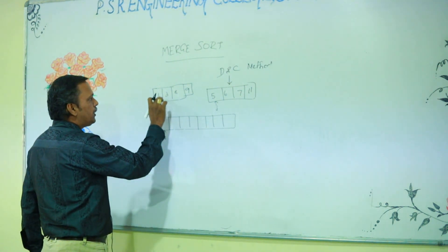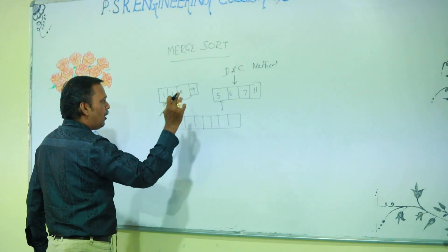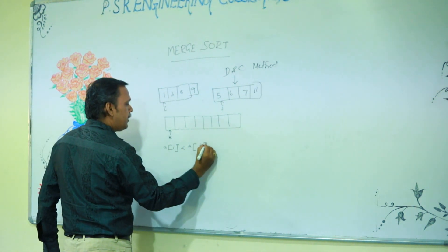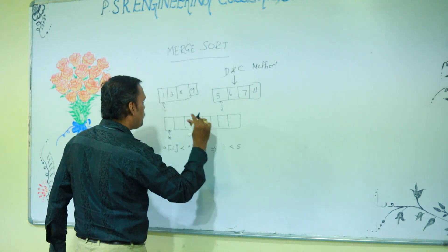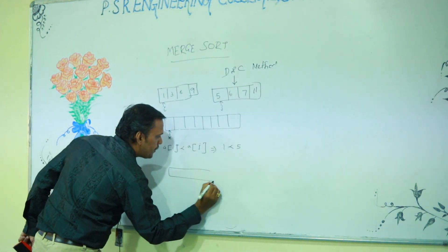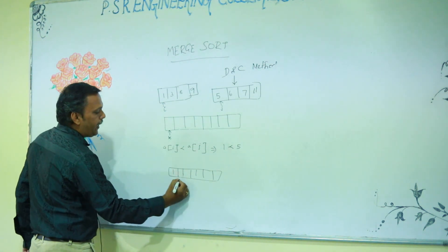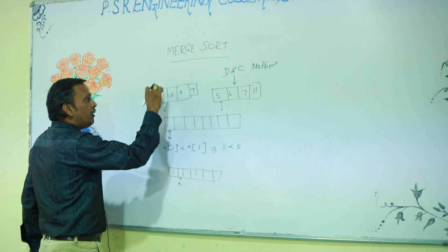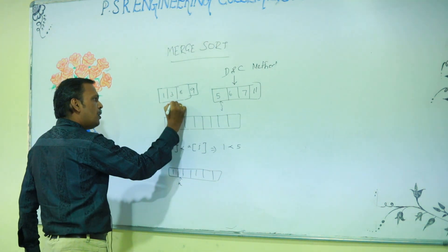Now compare these two arrays: 1 and 5 will be compared. 1 is smaller and 5 is larger, so a[i] < a[j] — the condition is true, so 1 is less than 5. The condition is true, so the i-th element 1 will be placed into the new auxiliary array. The pointer will be moved to the next empty position, and k will also be moved to the next empty position. The left-side array pointer also moves one position.